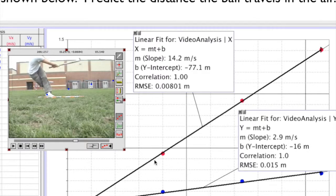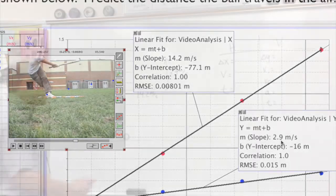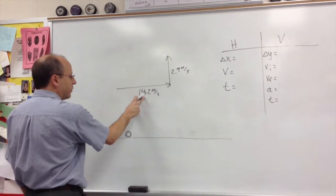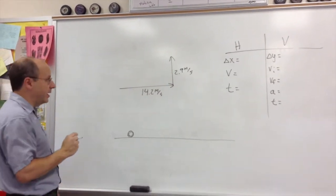When we brought it into Logger Pro, we saw that it was moving forward at 14.2 meters per second. It was moving upward vertically at 2.9 meters per second. So Ashley hits the ball with a speed horizontally of 14.2, a vertical speed of 2.9.